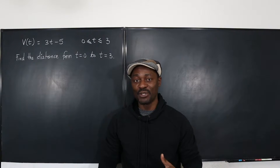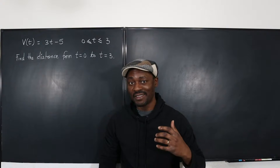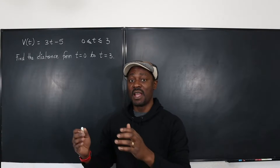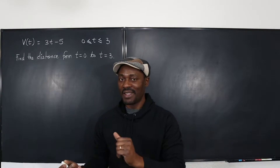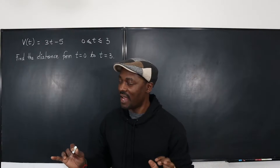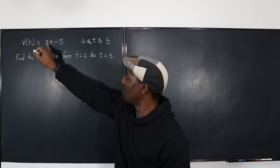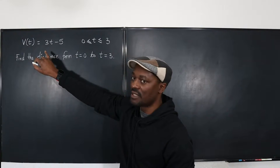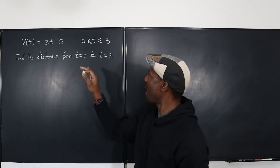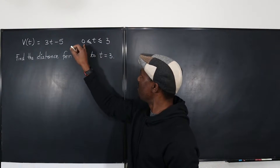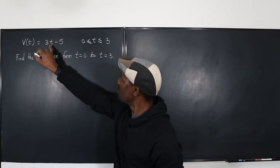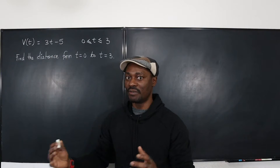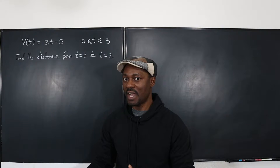When you get a question that gives you the velocity function and you're required to find the distance covered between t equals a certain time and t equals something, some people say all you have to do is plug in t at 3. So you get 3 times 3, which is 9 minus 5, that's 4, and then subtract: plug in 0 to get 3 times 0 minus 5, that's negative 5. So it's 4 minus negative 5, which is 4 plus 5, which gives you 9. But 9 is not the answer.